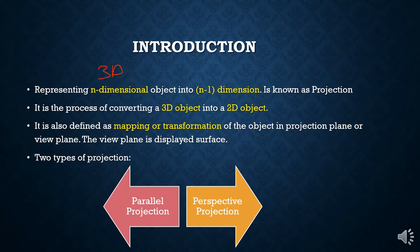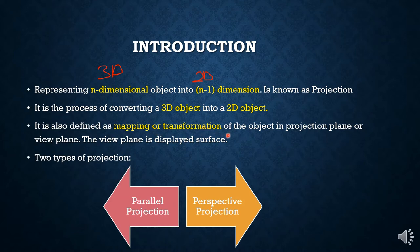It's going to represent that 3D object into 2D, because n-minus-1 dimension means n=3 minus 1 equals 2. So it is the process of converting a 3D object into a 2D object. It's not only converting a 3D object into 2D, but it's also defined as a mapping or transformation of the object onto a projection plane or view plane. This view plane or projection plane basically refers to the display surface.